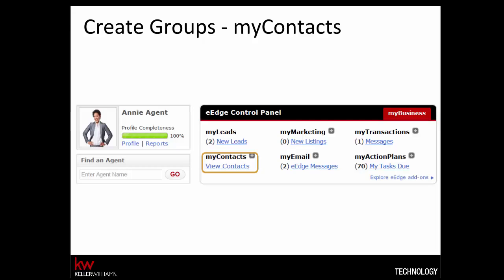If you have a group of people that you've met — let's say at an open house, for example — you can put them all on an 8x8 program at the same time by adding them to a group. If you're working with only an individual, you'll add them to whatever group you decide they belong to, and then you can add them to your campaign.